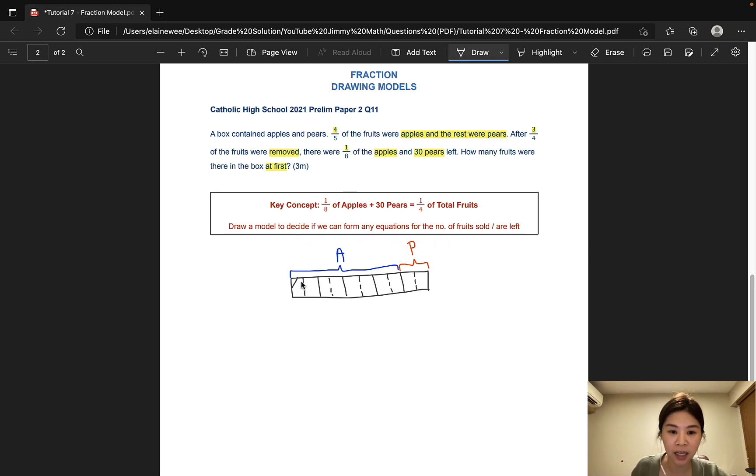And let's shade the one unit that represents the number of apples left. There were 30 pears left and we do not know how many units that represents. So let's just draw a random part here. What this means, as I've mentioned earlier, is that the two shaded portions represent one-quarter of the total. And the unshaded portion would naturally be the three-quarters of the fruits that were removed.